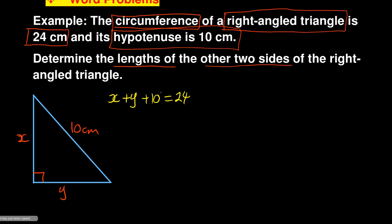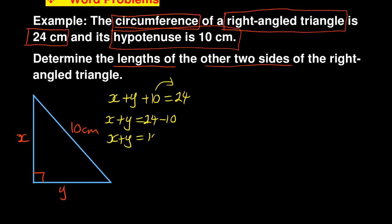If I simplify this and take 10 to the other side, it will be x plus y equals 24 minus 10, which gives x plus y equals 14. This is my first equation — call it equation one. From there, let me come up with the second equation.